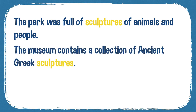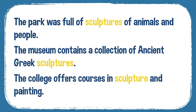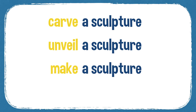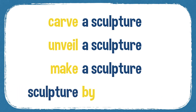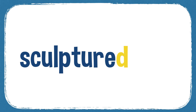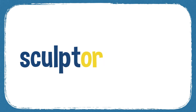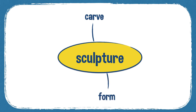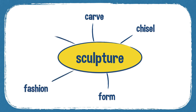'The park was full of sculptures of animals and people.' 'The museum contains a collection of ancient Greek sculptures.' 'The college offers courses in sculpture and painting.' You can carve, unveil, or make a sculpture, and a common preposition is 'sculpture by somebody.' Sculpture can also be used as a verb — for example, 'he was sculpturing the statue.' A person who makes a sculpture is a sculptor. Some synonyms: carve, form, chisel — often used with stone — fashion, shape, and model. To fashion something means to shape it, usually with your hands.